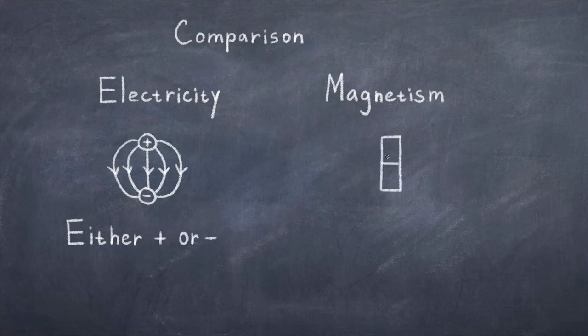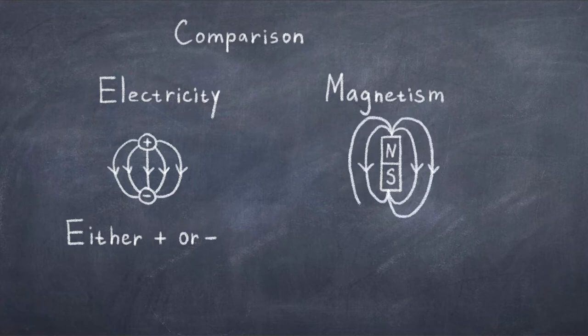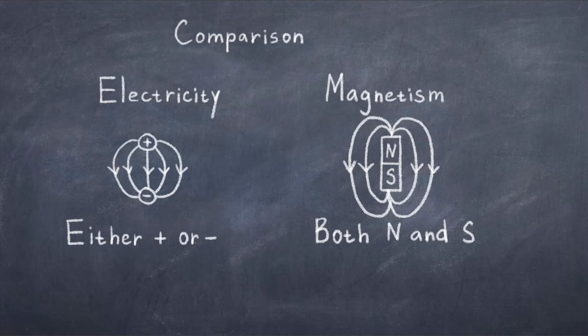As individual charged particles can either be negative or positive. You can also have a bigger object, like a battery, with a negative and a positive end, but individual particles are either plus or minus, negative or positive.